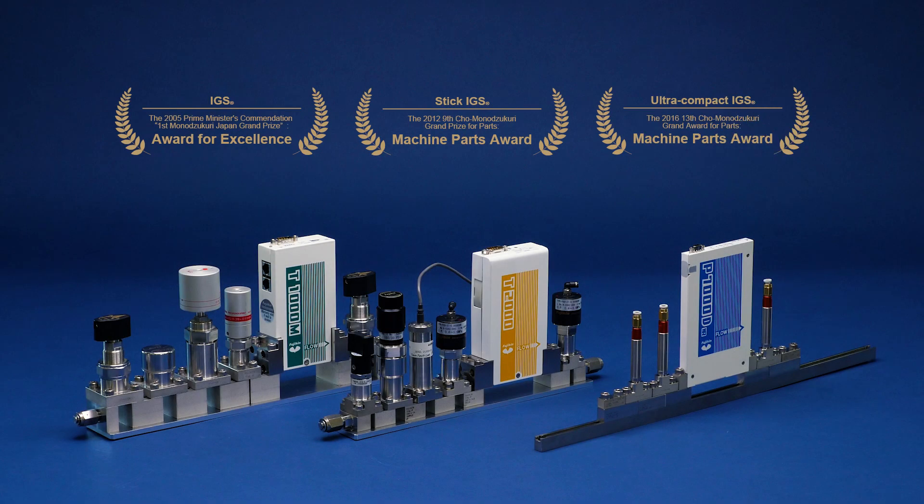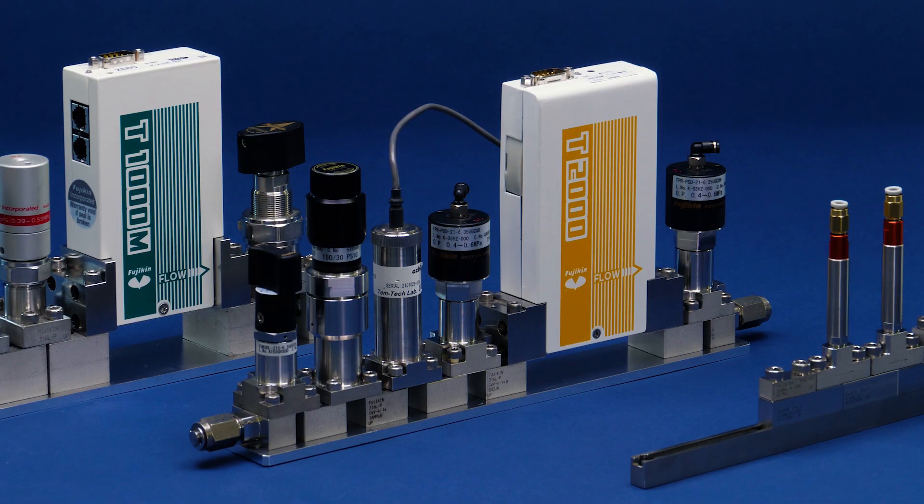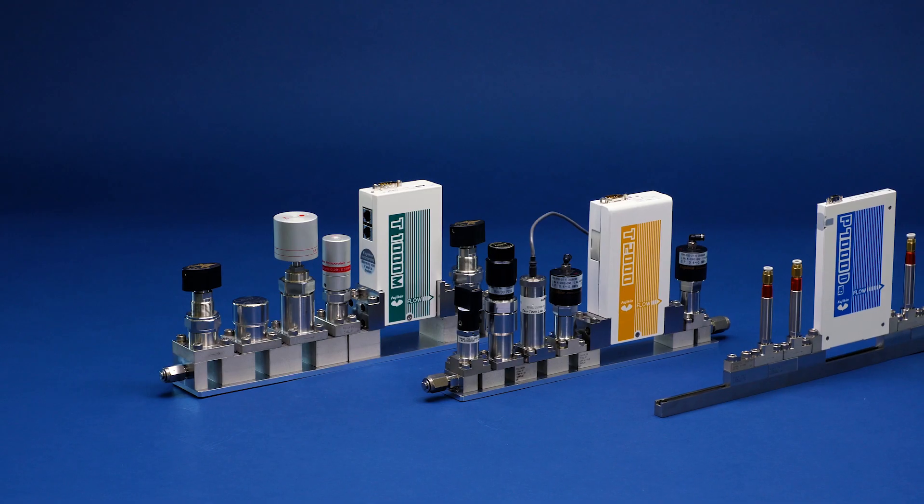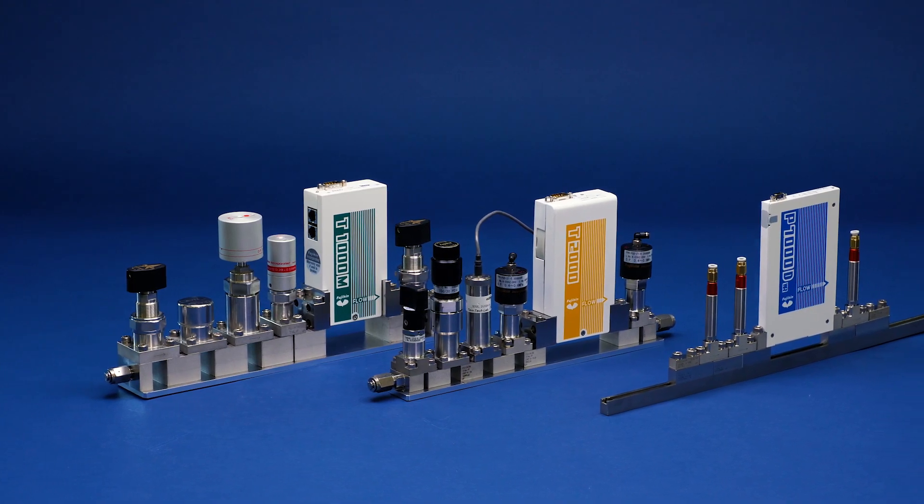Fujikin Integrated Gas System is a compact and high-performance gas system featuring easy maintenance, realized in pursuit of ultra-clean technology required in the semiconductor manufacturing industry.